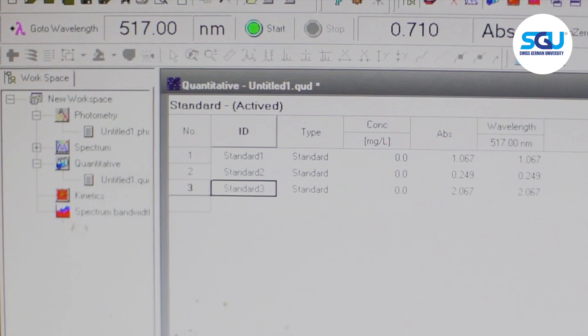The absorbance data then converted into percent inhibition values with a formula as shown.